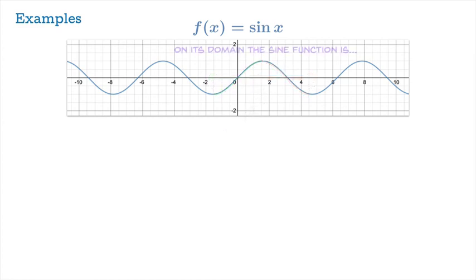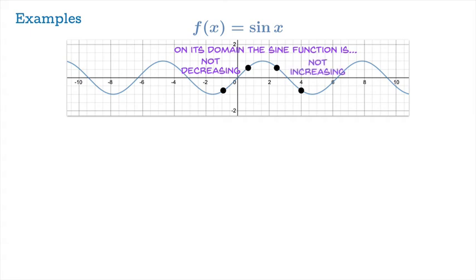Now, if we think about the behavior of sine on its entire domain — the real axis — by choosing arguments that move left to right where the function value goes up, we can see this function is clearly not decreasing on the whole real axis. Similarly, you can choose a pair of arguments where you move left to right and the function value goes down, so we can't claim sine is increasing on this interval either. So it's neither increasing nor decreasing, and we could say f is not monotonic.